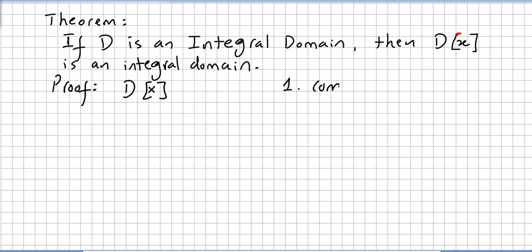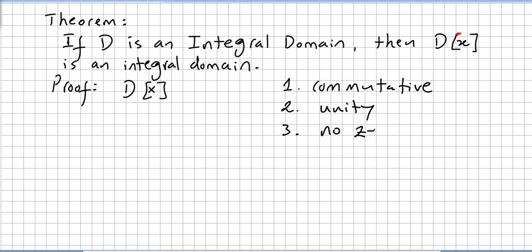We have to show that the ring is commutative, that it has a unity — a multiplicative identity — and no zero divisors. For commutativity: if D is an integral domain, then the ring of polynomials D[x] will be commutative every time that D is commutative. So the first one is checked.